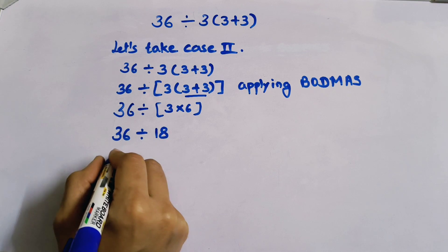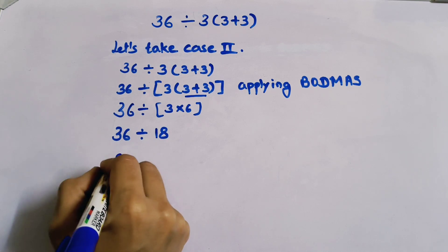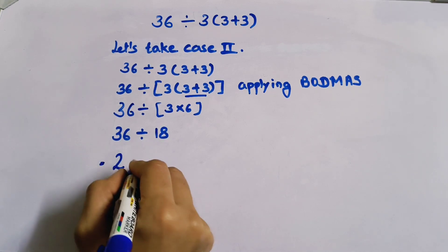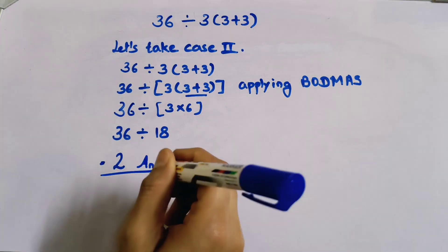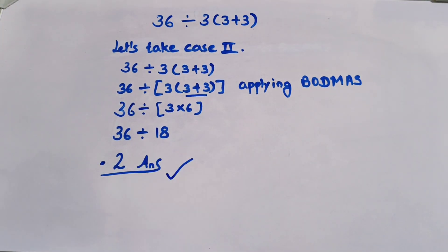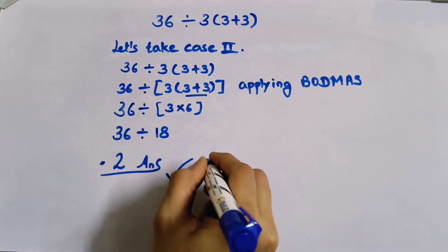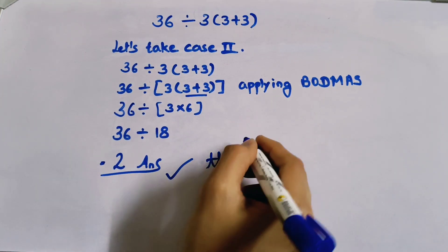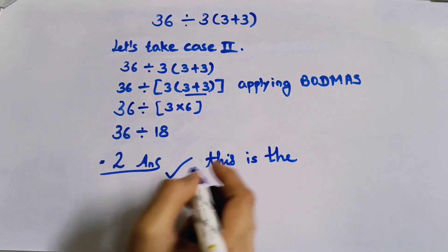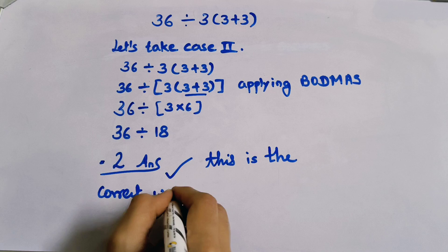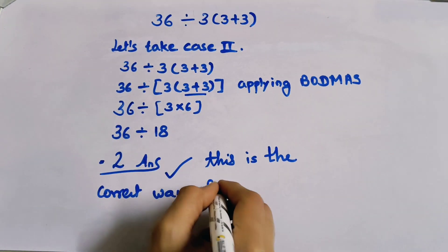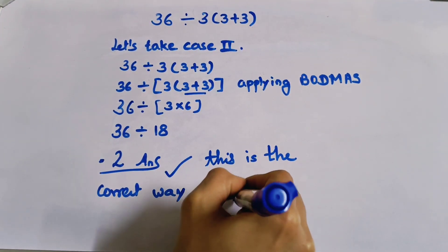18 into 36, so the answer is 2. Is this a correct way? Yes, this is the correct way of applying BODMAS.